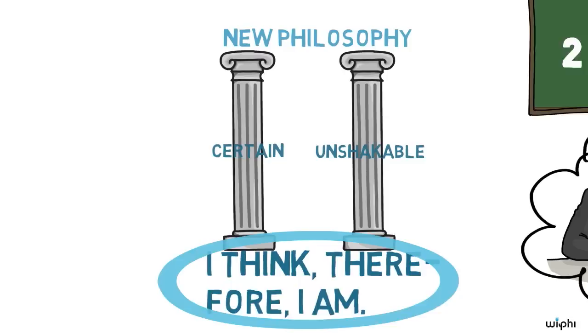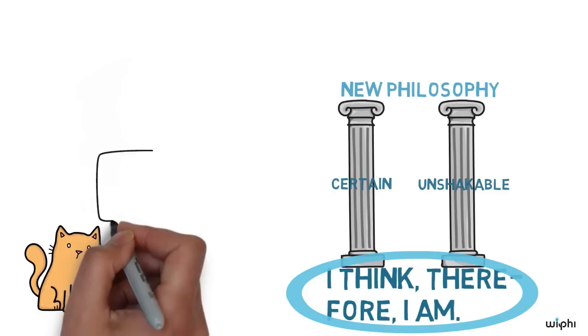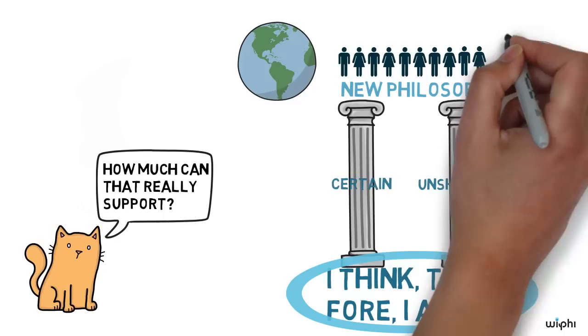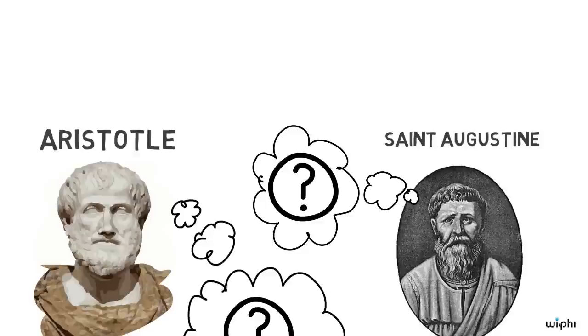The prospect of building a whole world view upon the certainty that we exist while we think must strike you as not very promising. Given that we can only be certain that we exist while we think, how can we ever know that we live on a planet we share with human beings and other animals and which orbits the sun? And how can you know that 2 plus 2 equals 4 or that you are watching a video?